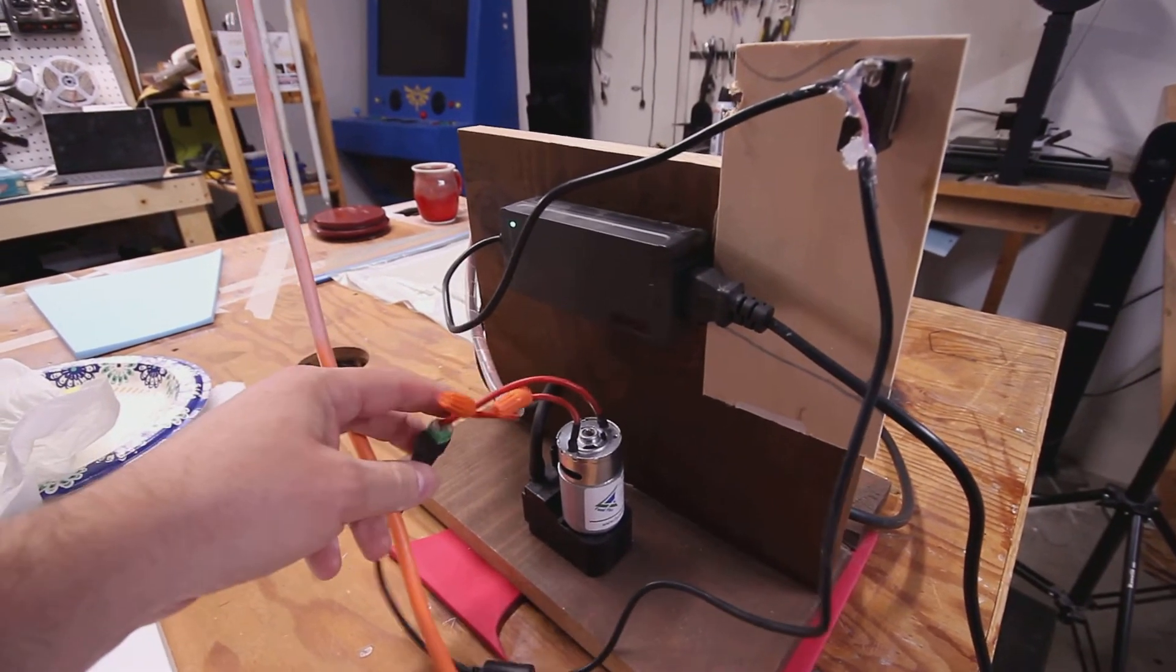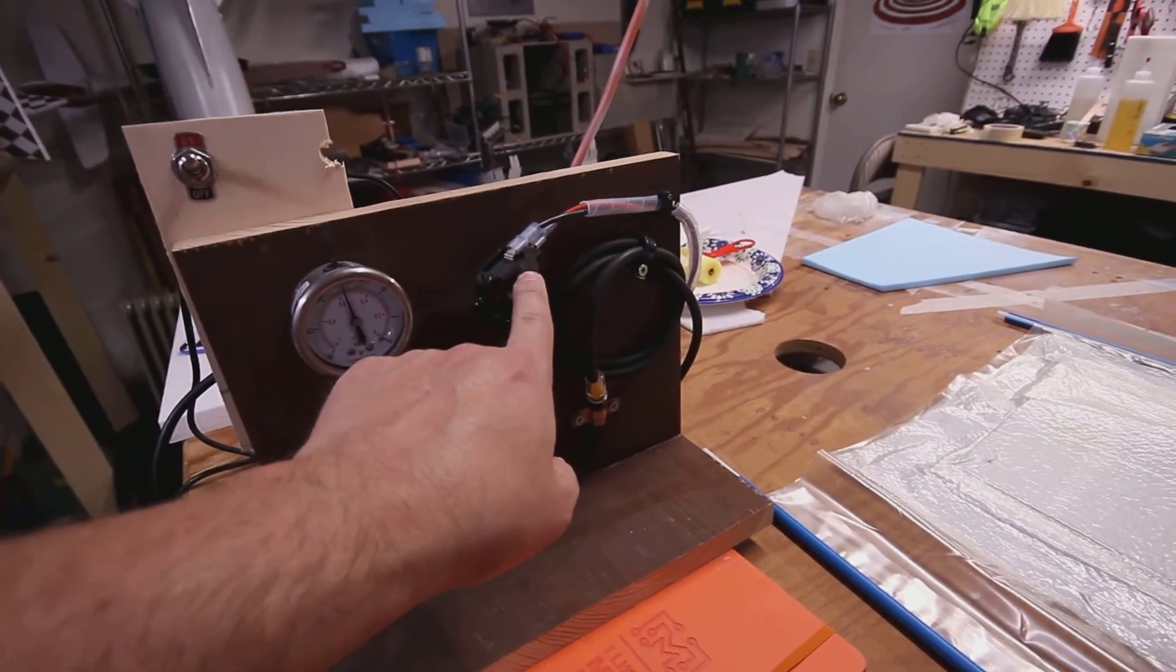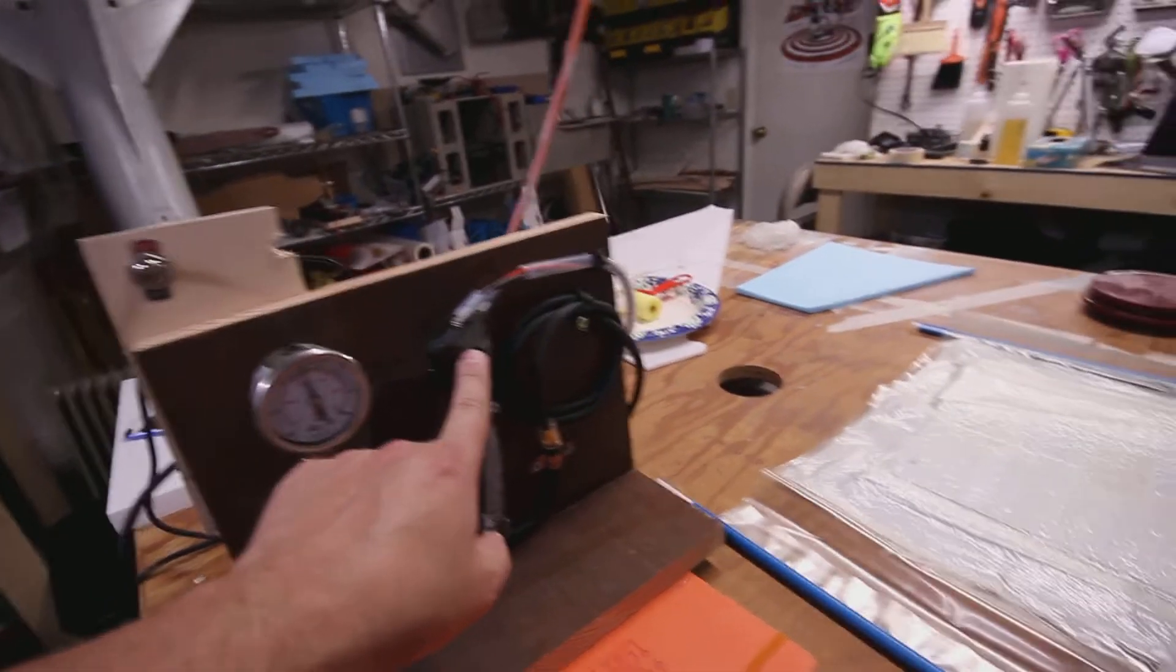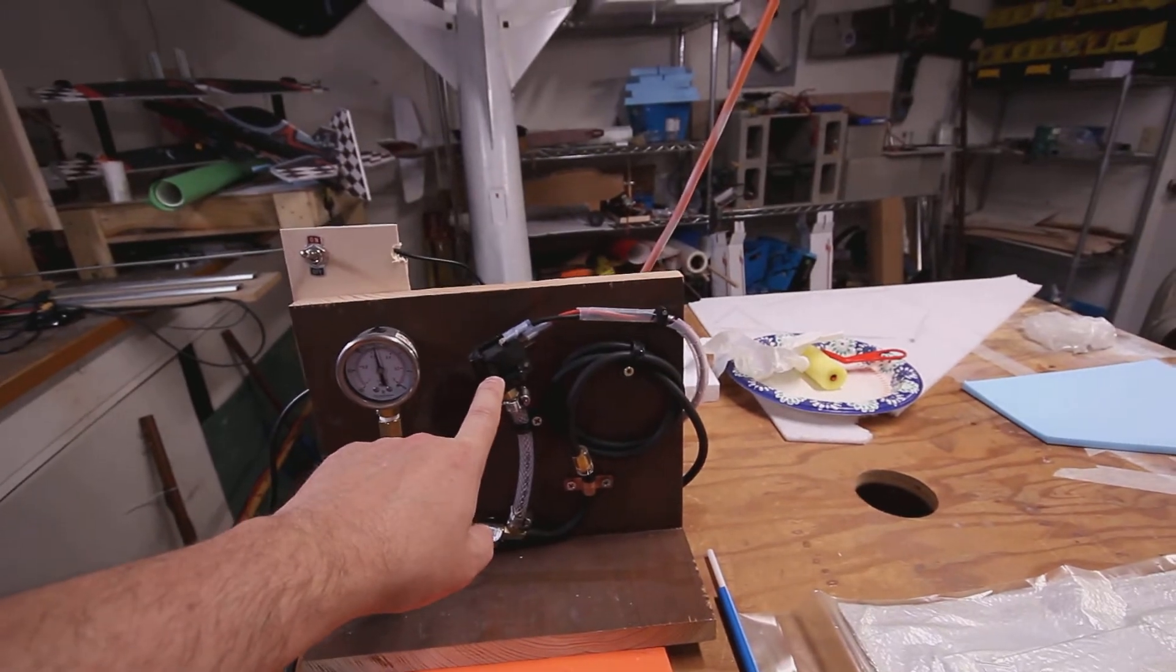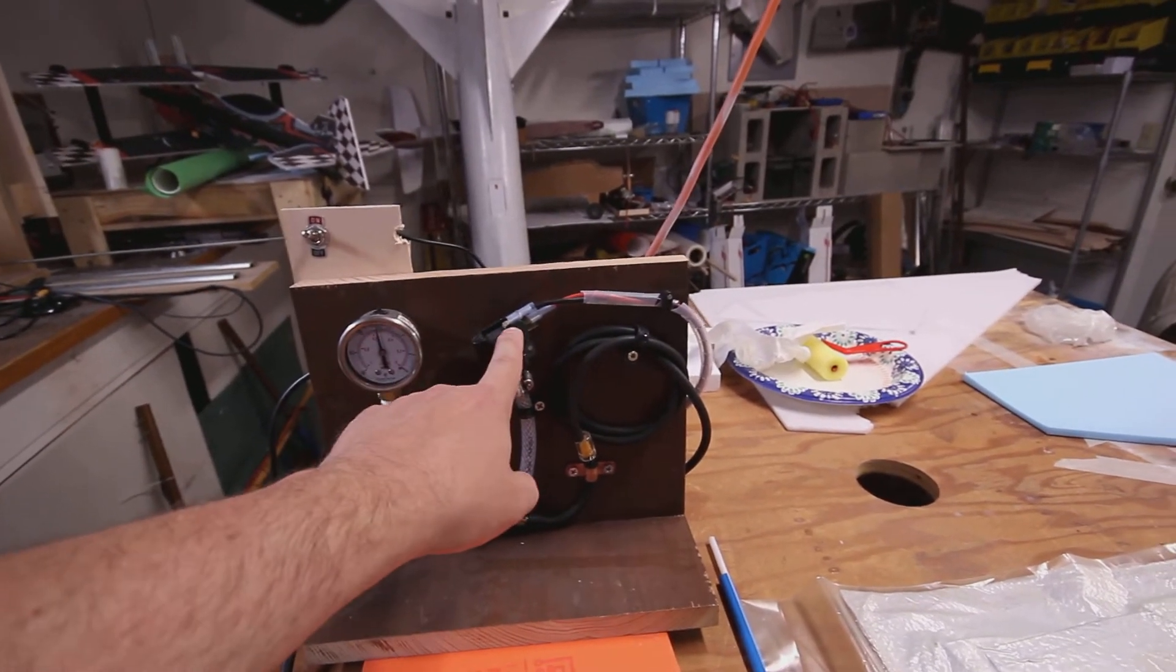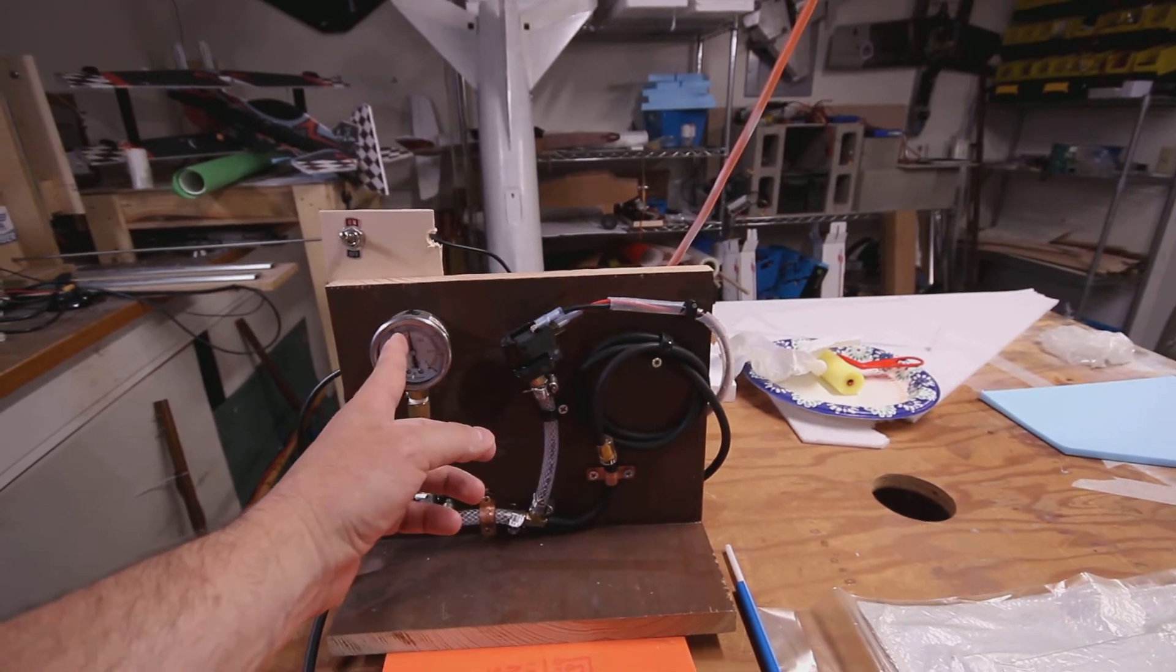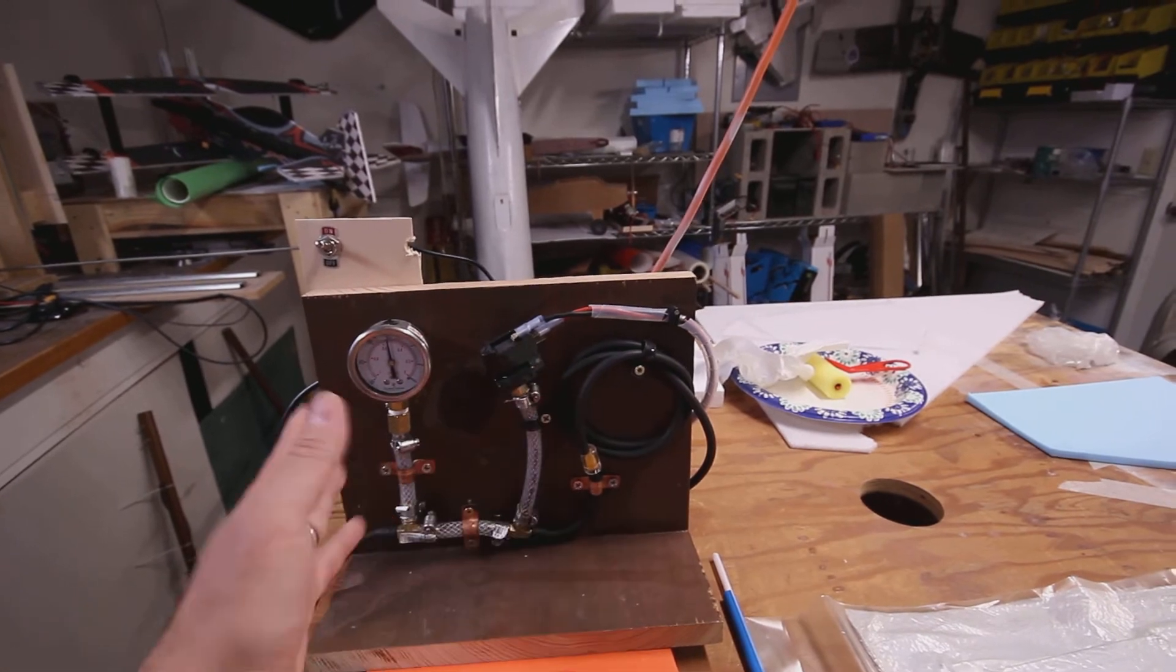So this is basically, I mean literally, it's a cherry switch and it's normally open. When it notices that the pressure is too low, it completes the circuit and the pump goes up to whatever you set it to. Once it realizes that, it breaks that connection and the pump shuts down.